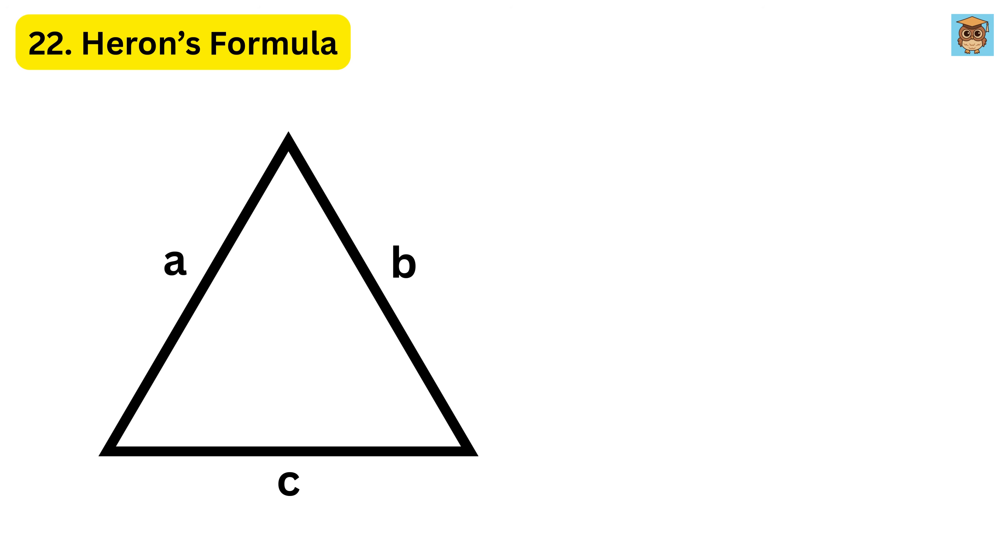22. Heron's formula is a powerful way to find the area of any triangle using just its three side lengths. If A, B, and C are the sides of a triangle, then first you calculate the semi-perimeter S, which is A plus B plus C divided by 2. Then you plug it into the formula. Area is square root of S times S minus A times S minus B times S minus C.